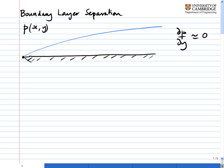Physically, we're simply saying that if we look along a line at constant x — look at this red line here — the pressure at the top is the same as the pressure all the way along in that direction.